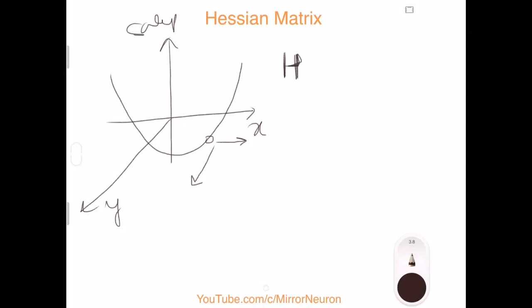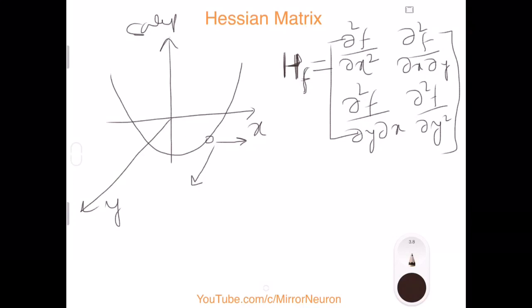Typically it is given by the bold H alphabet with a superscript of F and it looks something like this. In this case, where we have two variables, it would look like the double derivative or the second order derivative of the function with respect to x, and double derivative with respect to F given by dx dy. Remember we are changing x and y both. Similarly, we can have df dy dx and we have double derivative with respect to y. So this is in case when we have two variables.